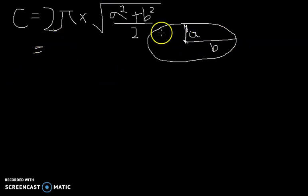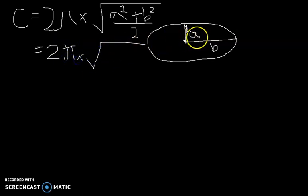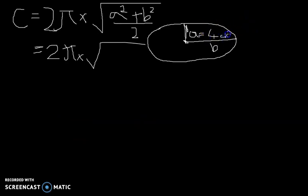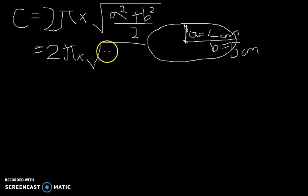Let's simplify and substitute in values. Let's do 2π multiplied by the square root of a squared plus b squared over 2. Let's say a is 4 centimeters and b is 5 centimeters. I know it's not to scale but as you move higher into mathematics nothing will be at scale. So a squared is 4 squared, plus b squared which is 5 squared, all over 2.